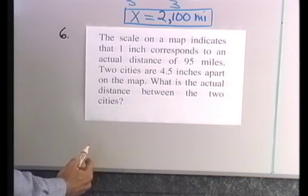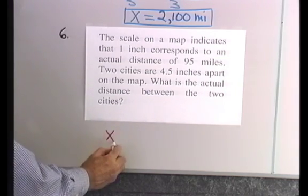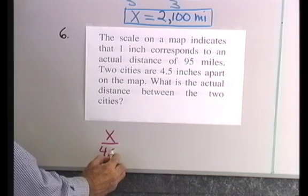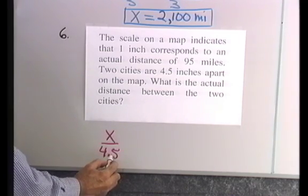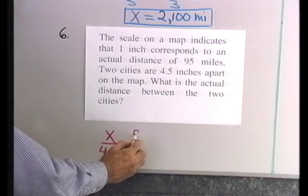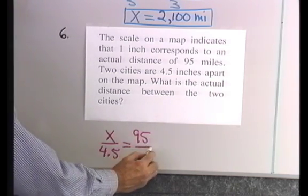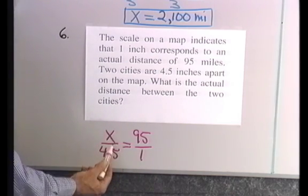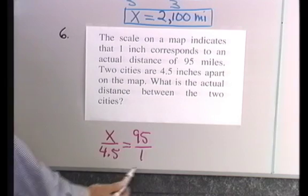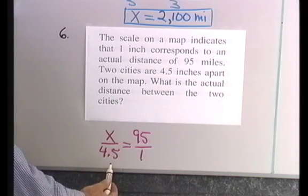Well, let's let x be equal to that distance. And this is what we'll have. x is to 4.5, x miles is to 4.5 inches on the map as 95 miles is to 1 inch on the map. So here I have miles to inches, miles to inches. That gives me a proportion that describes the situation.